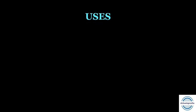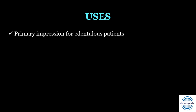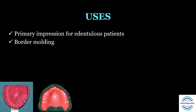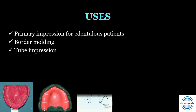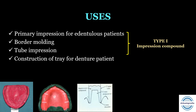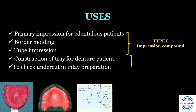Uses of impression compound: First, it is used to make the primary impression for edentulous patients — only when there are no undercuts. Second, for border molding of the custom tray for complete denture patients. Third, for tube impressions — single tooth impressions used in conservative dentistry to make a single tooth die. All three uses employ Type 1. Type 2 tray compound is used for construction of denture trays and for checking undercuts in inlay preparation.